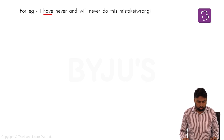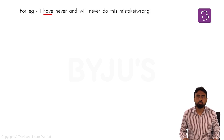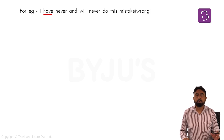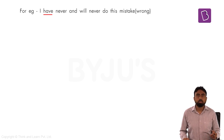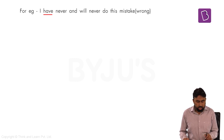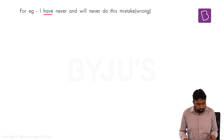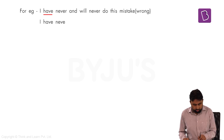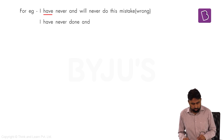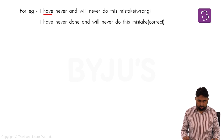What is the error? The verb 'do' used with 'will' is correct because in simple future tense we use the first form of the verb. But the part with 'have' is not complete — with 'have' the verb is not used in the right form. We cannot just use the base verb with 'have'. In present perfect tense, we use 'have' with the third form of the verb. So the correct sentence is: 'I have never done and will never do this mistake.'